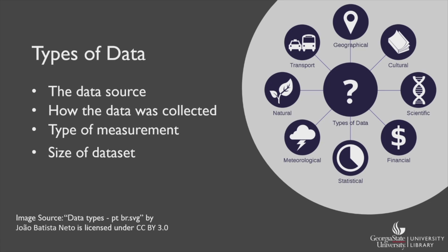Since data can be defined in such a broad and encompassing way, like we discussed in the last video, if you start to look around yourself, you'll see endless potential data sets and types of data. We can think about the various types of data in different ways. We can look at the source of the data, who collected the data, and from where. We can also look at how the data was collected — was it collected through surveys? Was it collected through an experiment? There are also various types of measurements when it comes to data: was it quantitative or qualitative, or a mixture of both? We can also think about data in regards to its size. In this video, we'll break down all of these important data components.